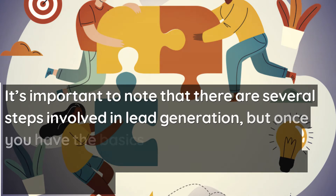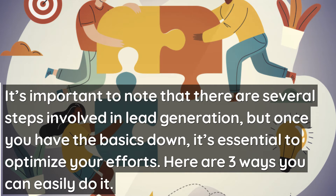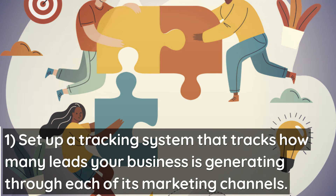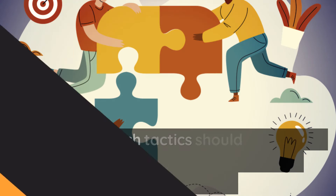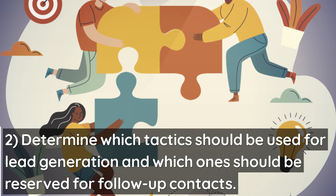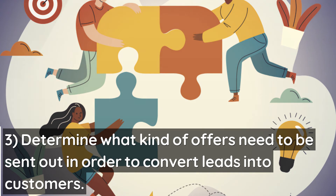It's important to note that there are several steps involved in lead generation, but once you have the basics down, it's essential to optimize your efforts. Here are 3 ways you can easily do it: 1. Set up a tracking system that tracks how many leads your business is generating through each of its marketing channels. 2. Determine which tactics should be used for lead generation and which ones should be reserved for follow-up contacts. 3. Determine what kind of offers need to be sent out in order to convert leads into customers.